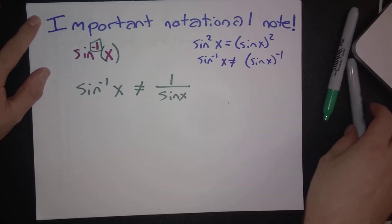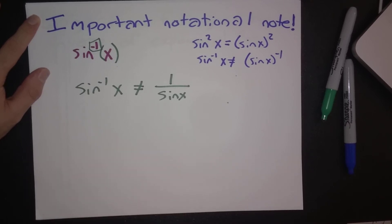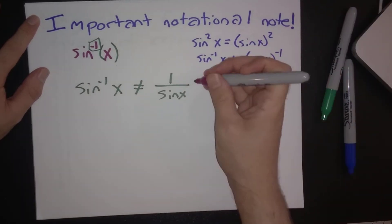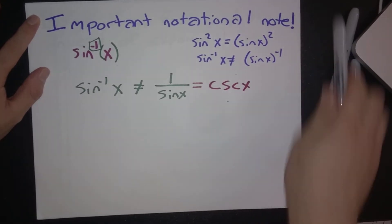So let's take a second and think, why don't we use this notation for 1 over sine x? It's because 1 over sine x is cosecant x.